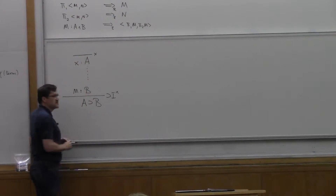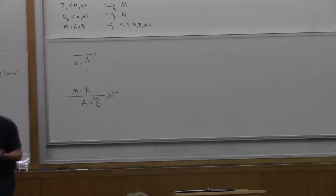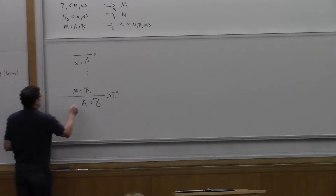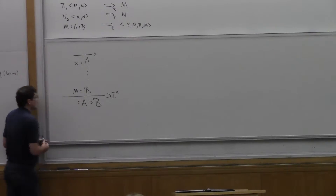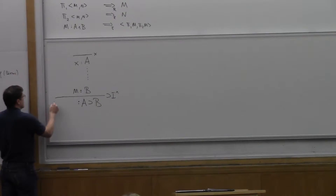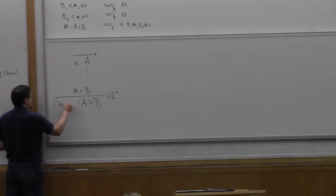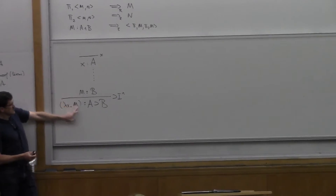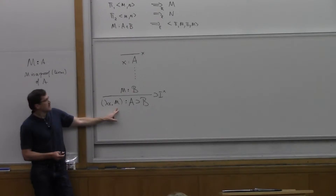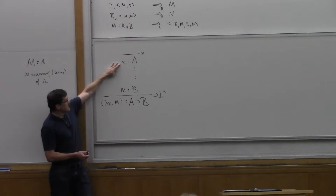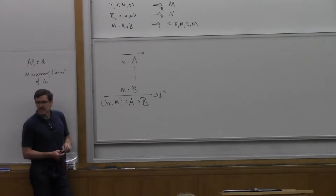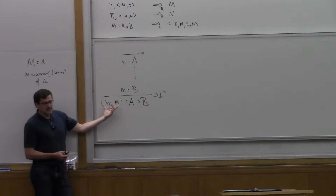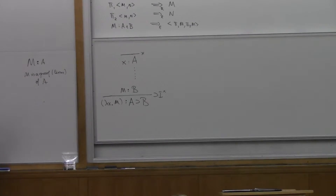We have some proof of A — we're just assuming it exists — but it's not a closed term, so we label it with a variable. The term here is going to be lambda X M. This is a function which, if you give it a proof of A, it gives you a proof of B. You should only be able to apply it to proofs of A, and it will guarantee to give back a proof of B. That's why we have a lambda abstraction, and that was the essence of Howard's paper in 1969.